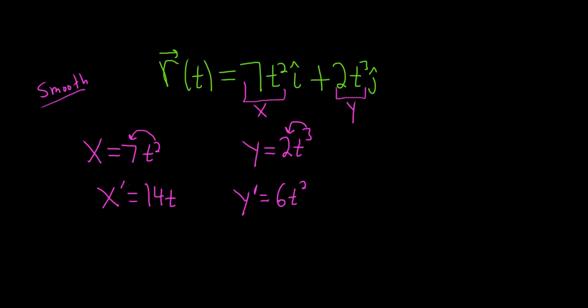So we're trying to find out where it's smooth. So basically it's going to be smooth as long as these are continuous and they're not both zero. So the idea is let's find out when they're not smooth. So we set both of these equations equal to zero at the same time.